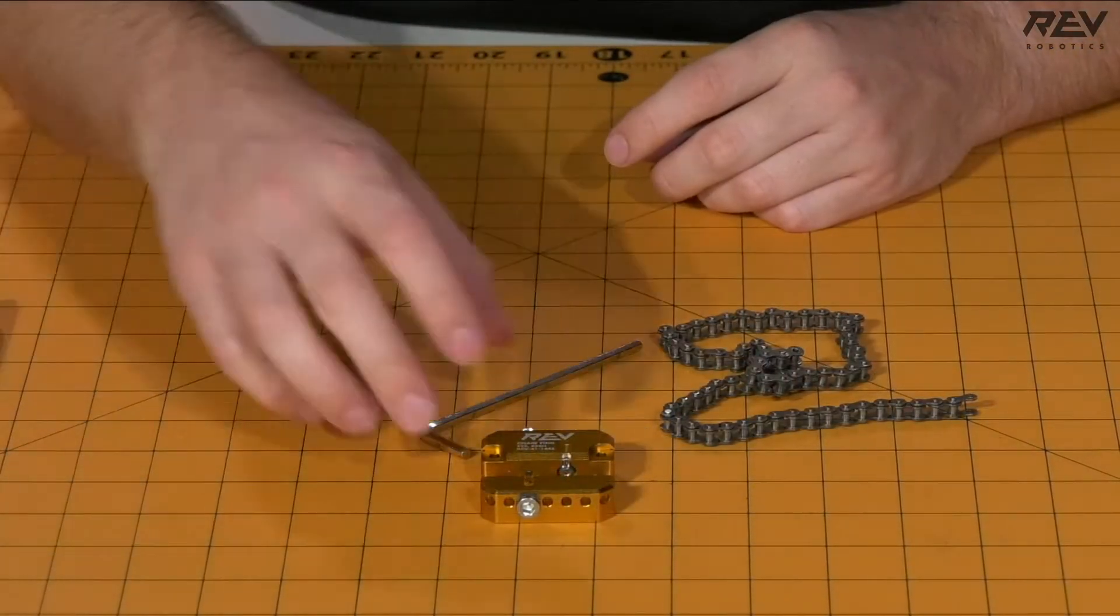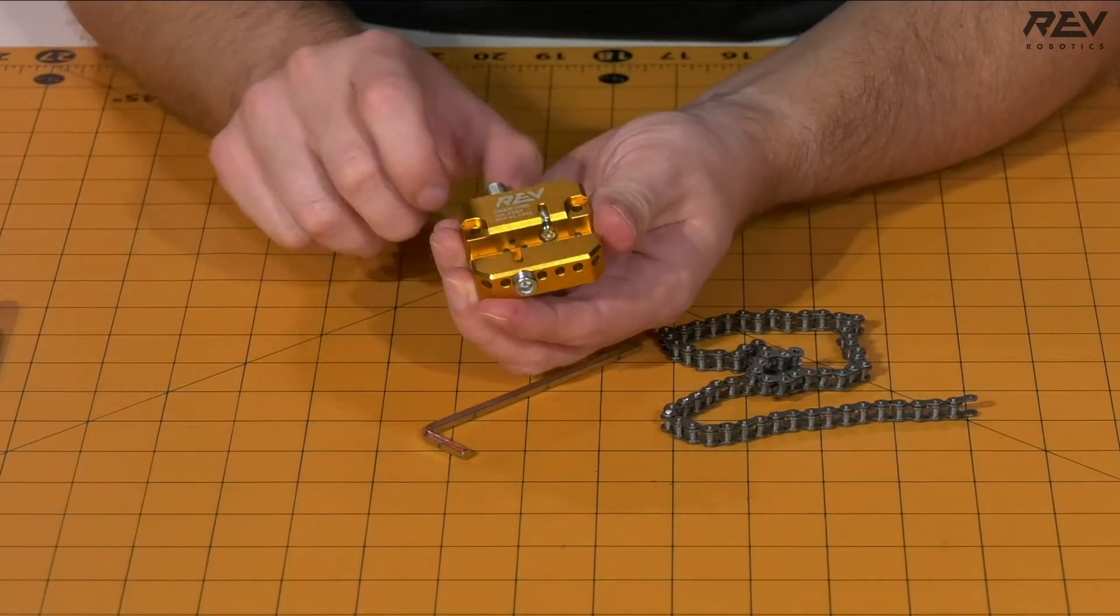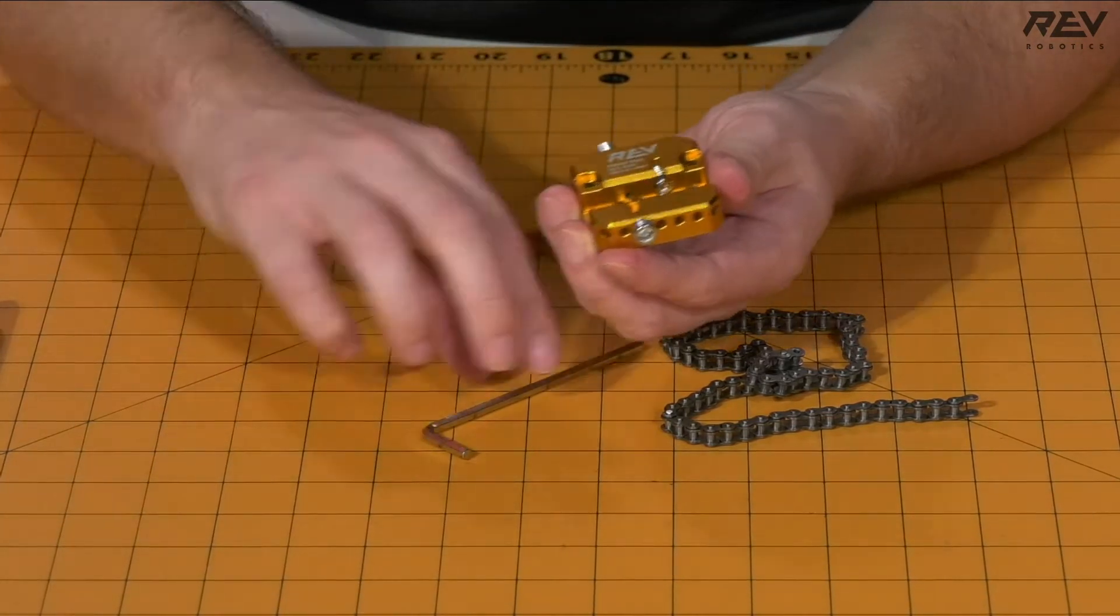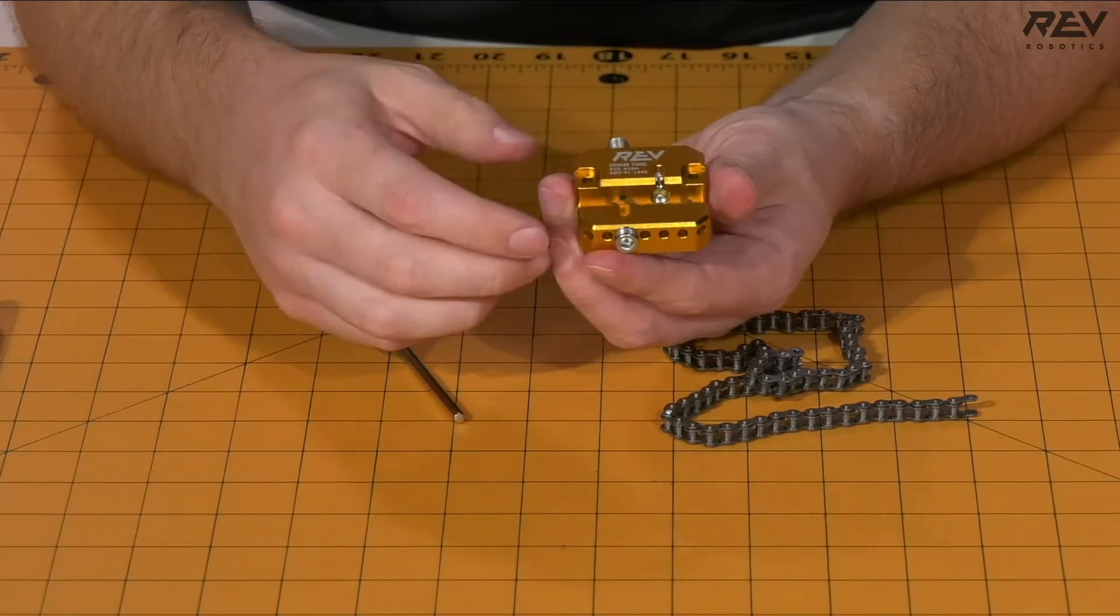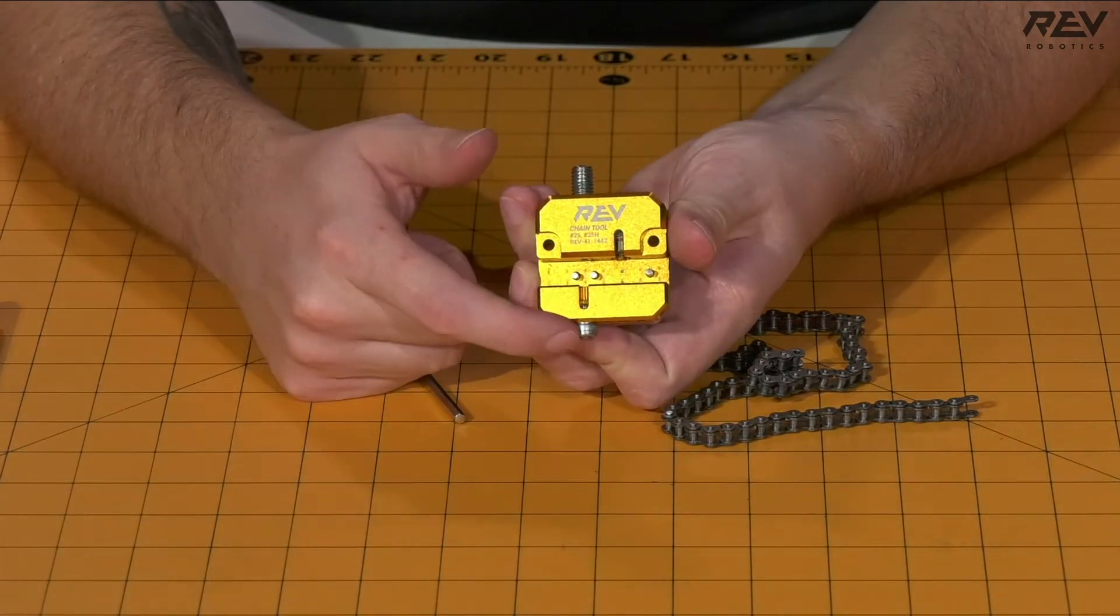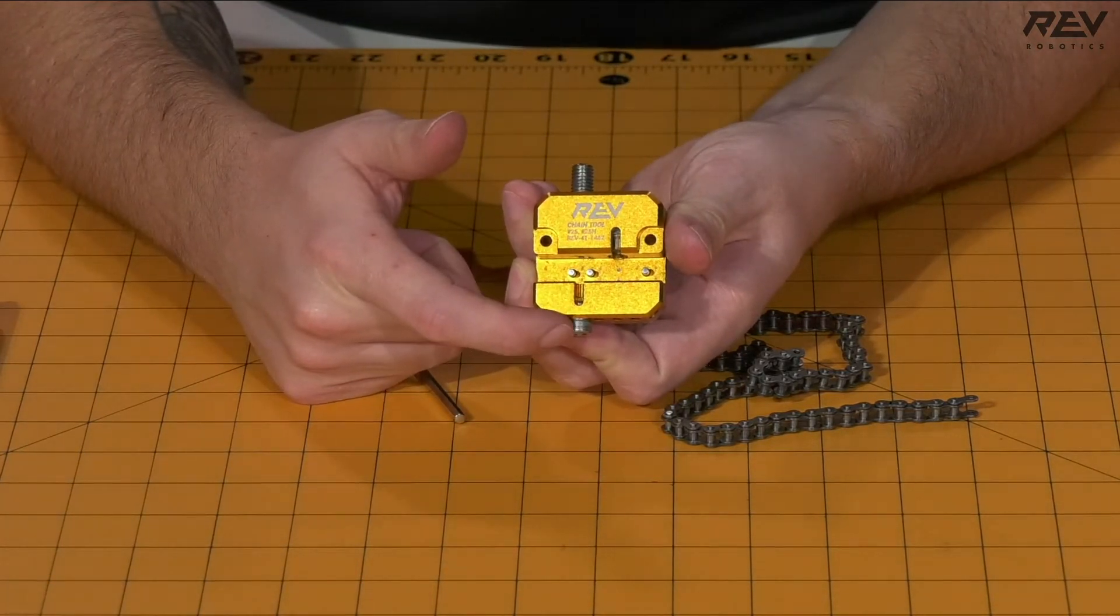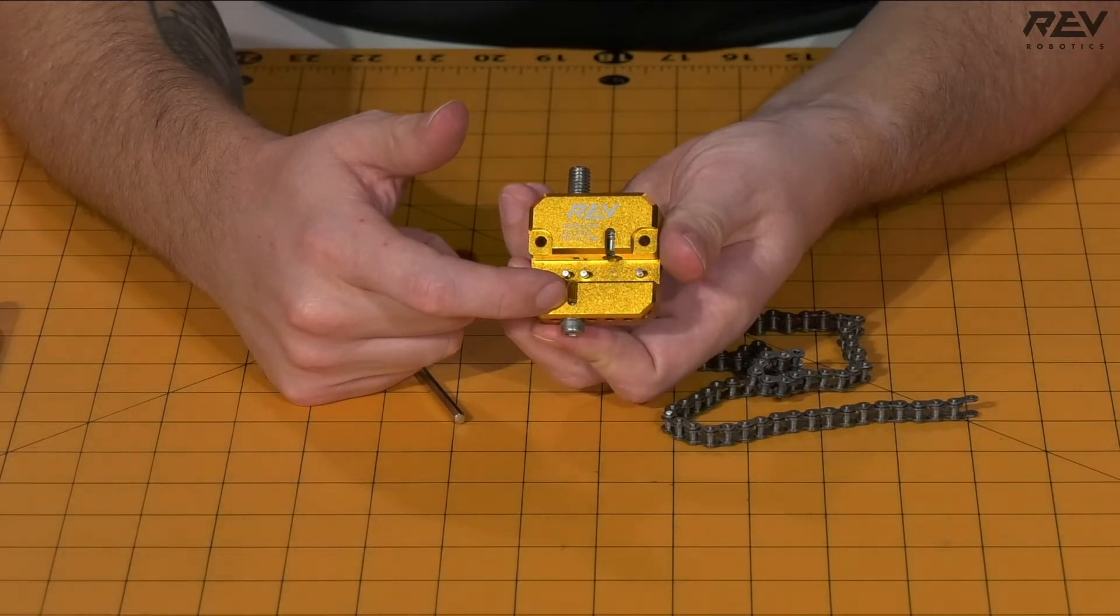From there, we're going to take our chain tool itself. We want to make sure that there is no interference in the guide here. So we're going to pull back our set screws here a little bit to make it where we're able to easily put the chain in place. Since we're going to be reseeding the pin on the chain, you want to keep the screw down here screwed in and as close to the body of the chain tool as you can get it.